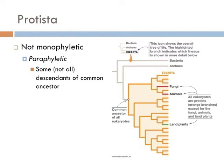Currently, the term 'protists' is used to refer to unicellular eukaryotes that either exist as independent cells or, if they occur in colonies, do not show differentiation into tissues. These terms are not used in current taxonomy and are retained really only as a convenient way to refer to these organisms, because they do not accurately represent the phylogenetic relationships.